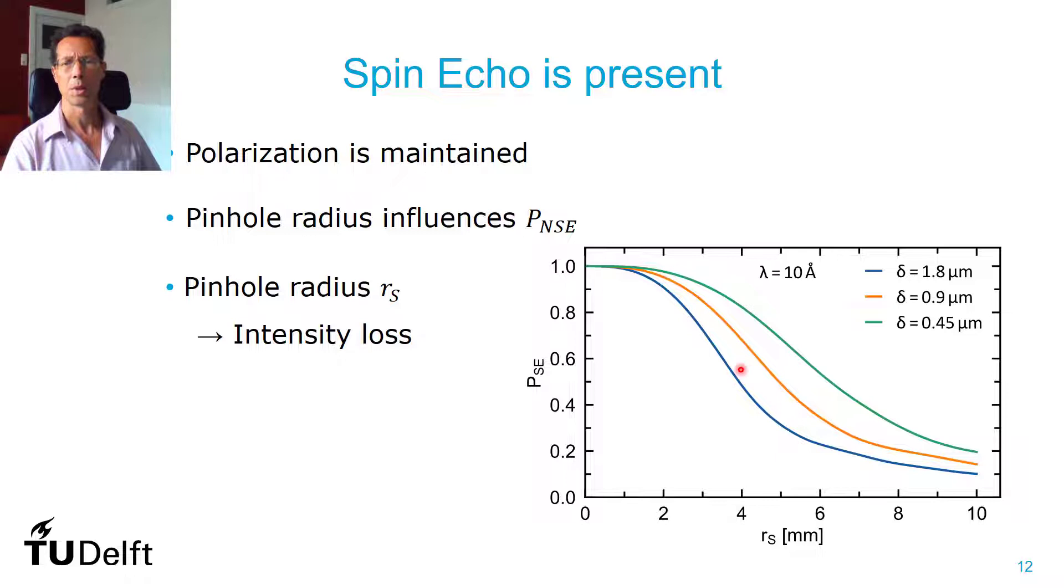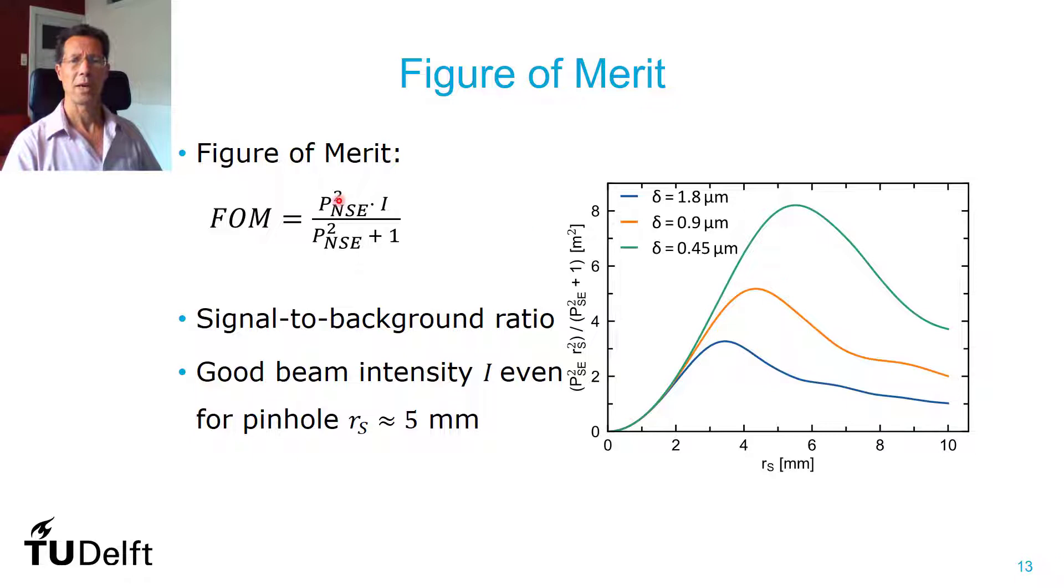If you define a figure of merit, for example, the polarization squared times the intensity, and the intensity is going with the area of the pinhole divided by the polarization squared plus one. Then for the figure of merit, you get a peak somewhere around the radius of the pinhole of five millimeters. And that's quite a nice, pretty big beam. But you would get still pretty intense spin echo if you do that. So that's good news. So in principle it will be possible.